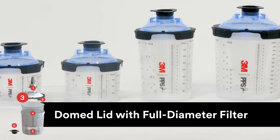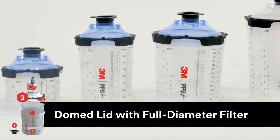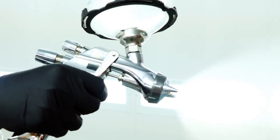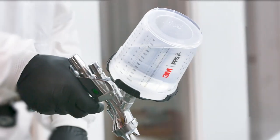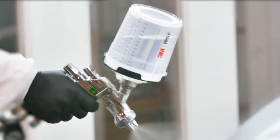Third, the lids on all 3M PPS Series 2.0 system sizes have been redesigned with the domed geometry that was first introduced with the midi cup. This new design allows more paint to sit below the full diameter filter and ready to spray at all times, which significantly reduces the likelihood of spitting and sputtering, especially in the last few ounces.